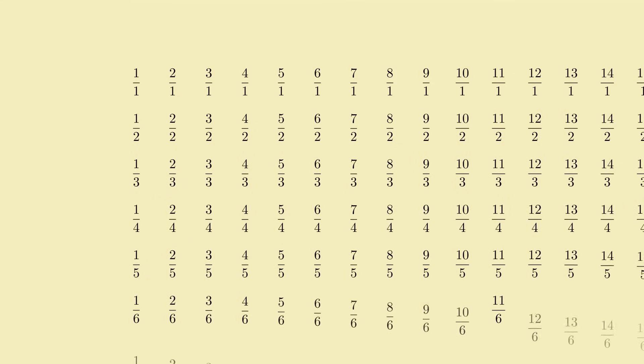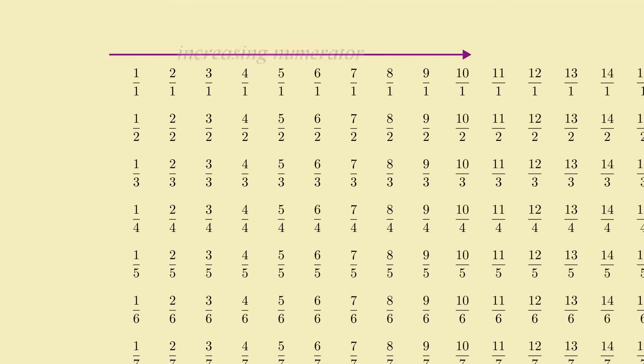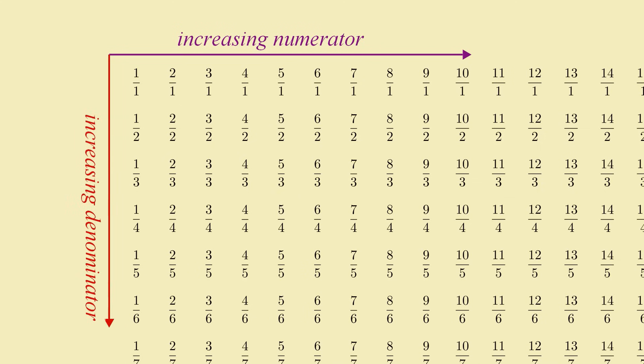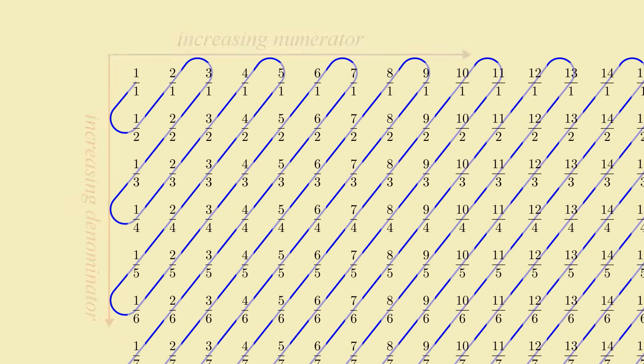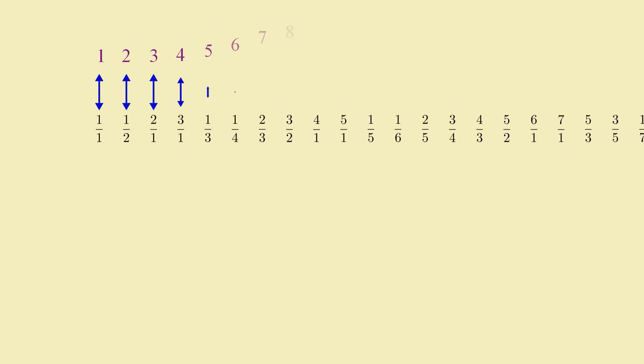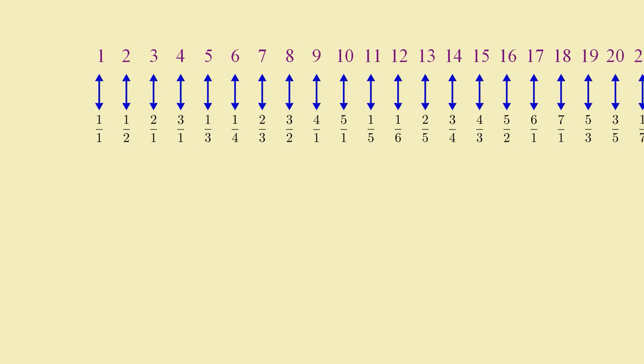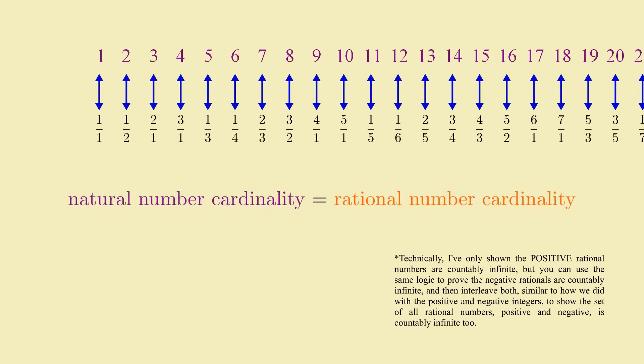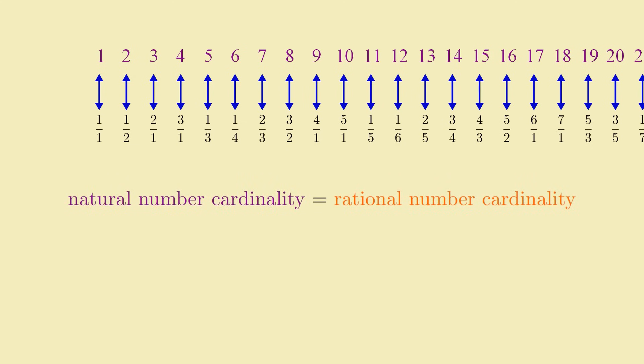To do it, you first arrange the rational numbers into an infinitely big table where moving within a row increases the numerator and moving within a column increases the denominator. You then weave a zigzagging string through the table which passes through all the diagonal lines. Unwrap this string and delete the fractions like 2 fourths which are duplicates of simpler fractions like 1 half, and you've put every single rational number into a single list, leading to the rather surprising conclusion that there are as many positive whole numbers as there are whole number fractions.